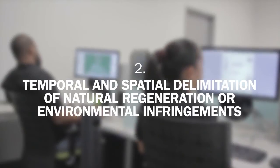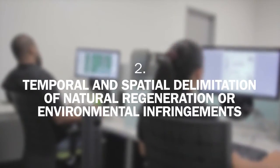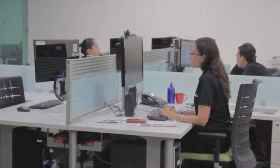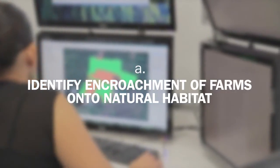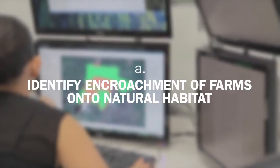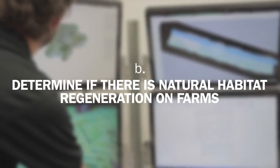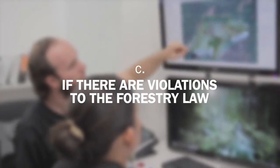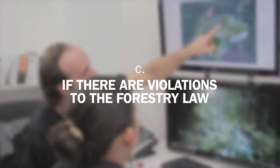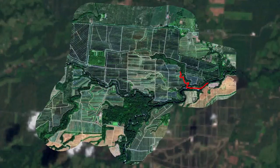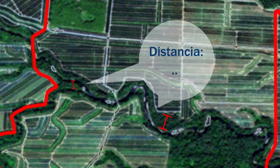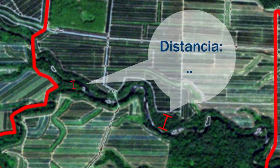The second principle is the temporal and spatial delimitation of natural regeneration or environmental infringements. The monitoring system processes imagery in order to identify encroachment of farms onto natural habitat, determine if there is natural habitat regeneration on farms, or if there are violations to the forestry law — for example, by measuring the area between riverbeds and the edges of plantations, to determine if the distance is smaller than that which is allowed by law.